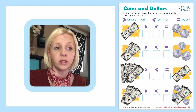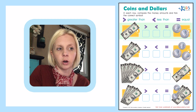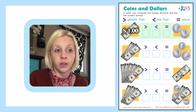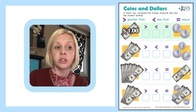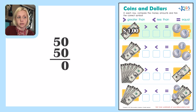Let's start on the first one. This first one is a dollar bill, so the amount is one dollar — I'll write that to the side. Then on the other side we have two 50-cent pieces, or half dollars. So 50 cents plus 50 cents: zero plus zero is zero, five plus five is ten, which gives us 100 cents, which is a dollar.